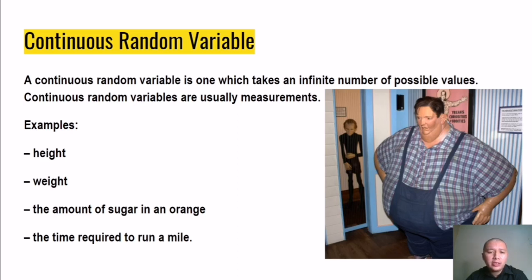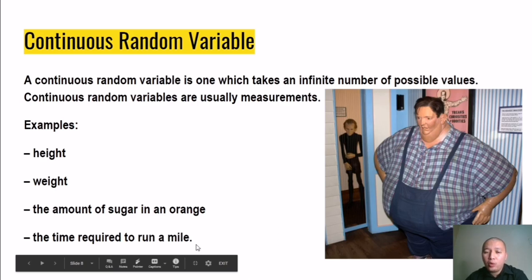The amount of sugar in an orange is also an example of a continuous random variable because there is no specific number of milligrams of sugar in an orange. Every orange will vary. And the time required to run a mile is another example because it talks of time and distance. When we say time, we will be able to finish the marathon or sprint at different times because we run at different paces. All of those things pertain to continuous random variable. When we hear examples of height, weight, amount, time, and distance, it is almost automatically that the given is an example of a continuous random variable.